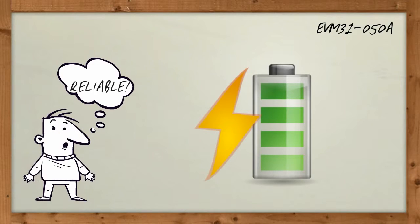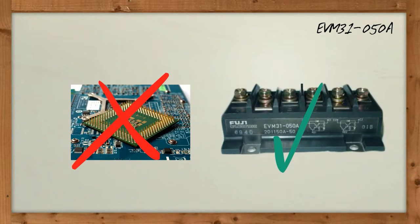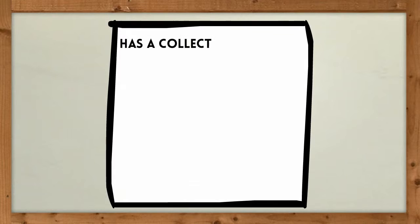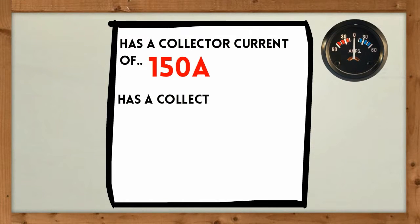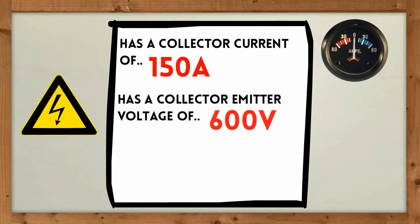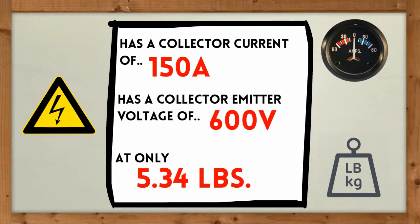This makes it more reliable compared to the usual semiconductors. This lightweight power transistor module has a collector current of 150A and a collector emitter voltage of 600V at only 5.34 lbs.